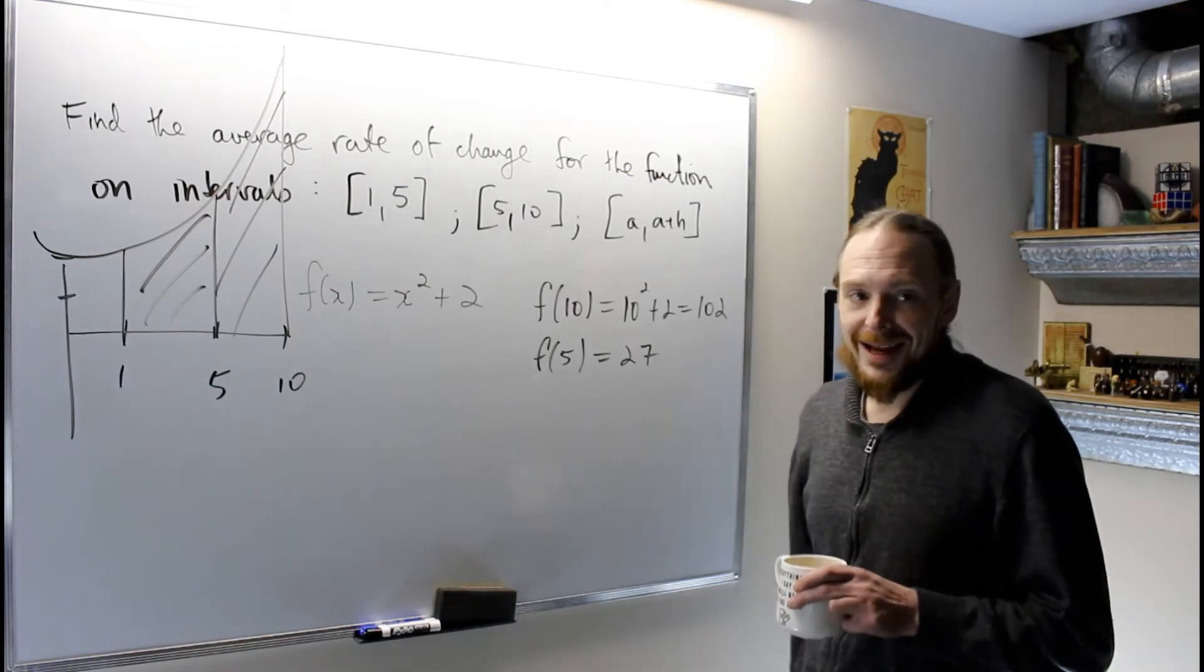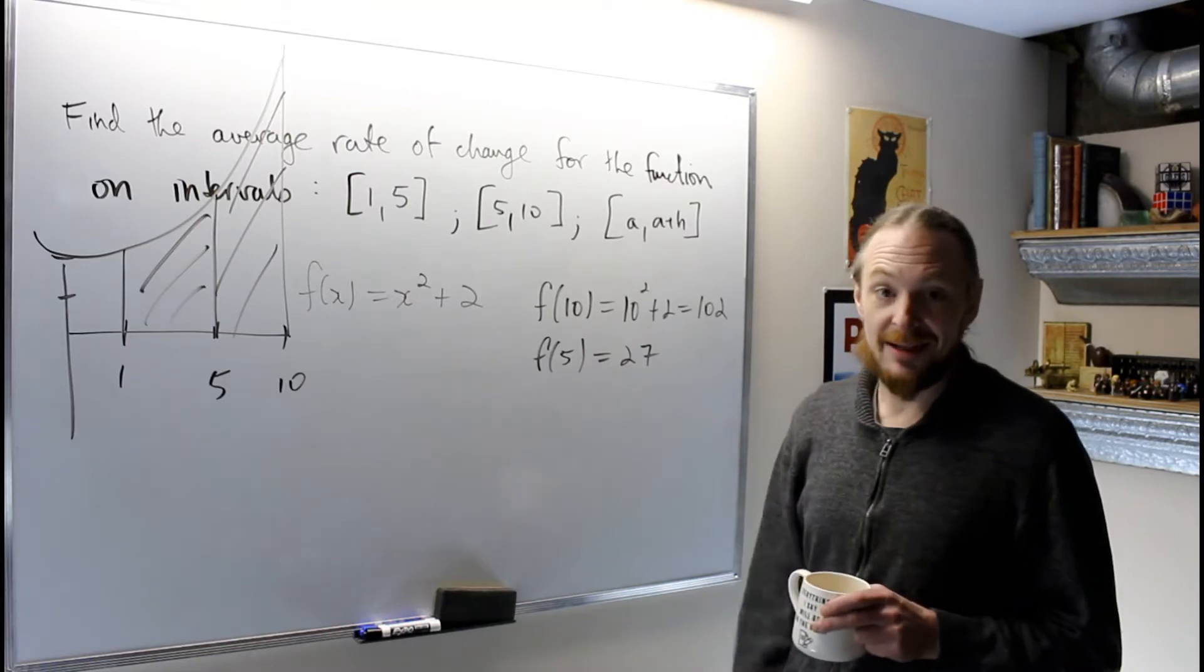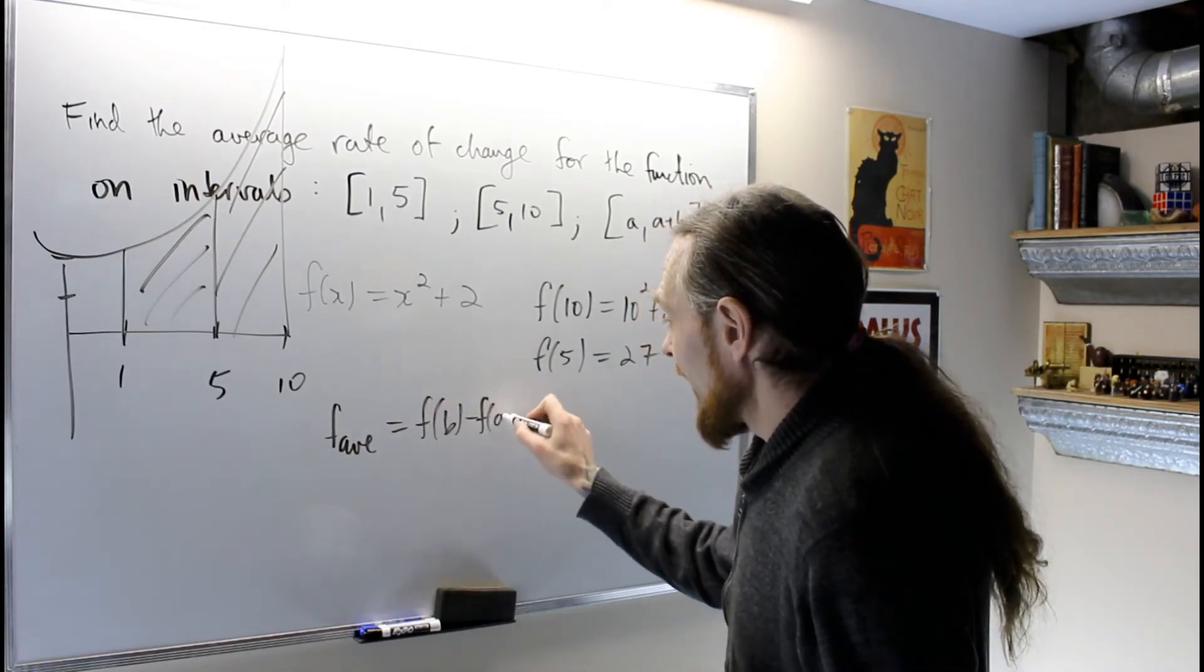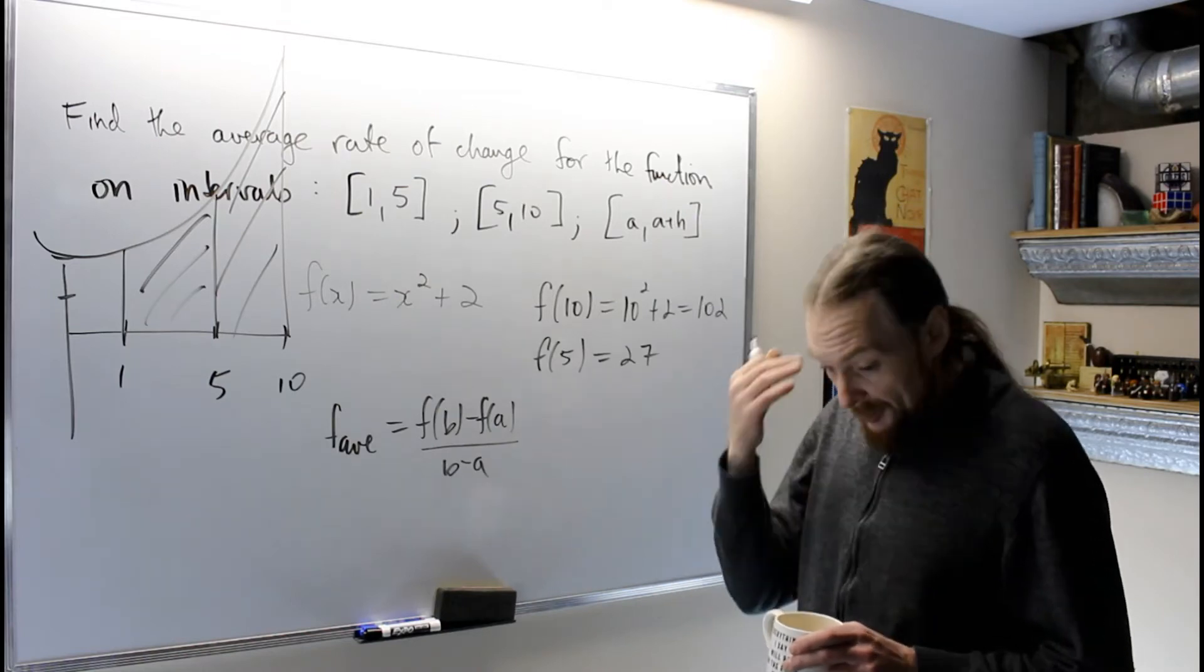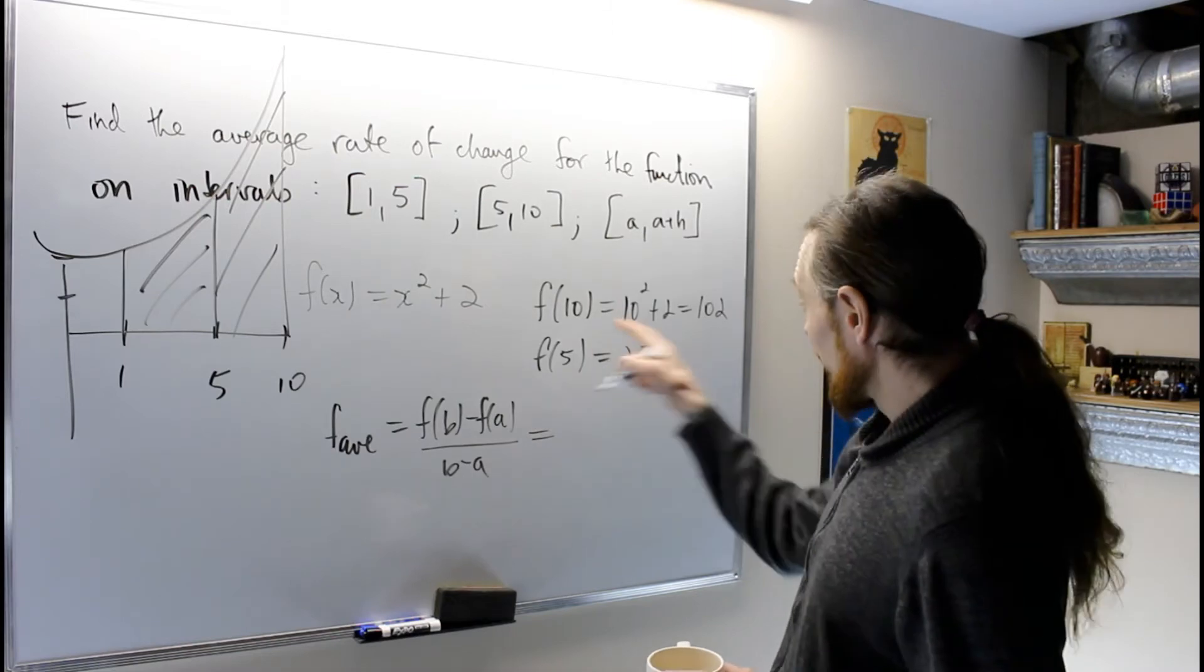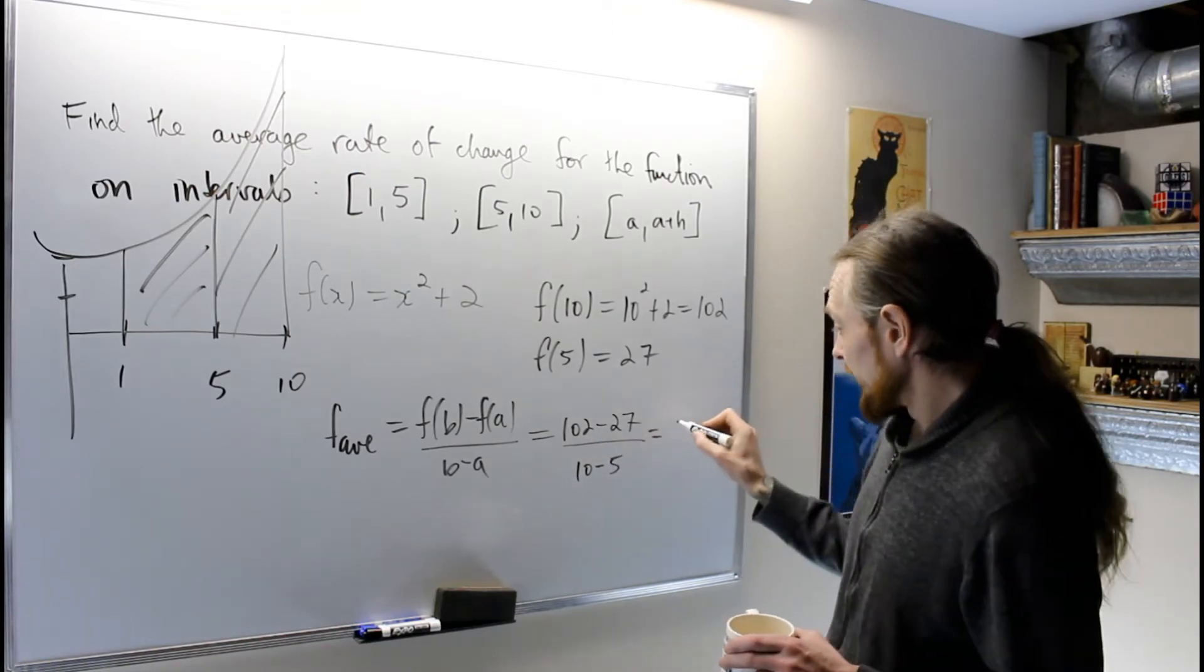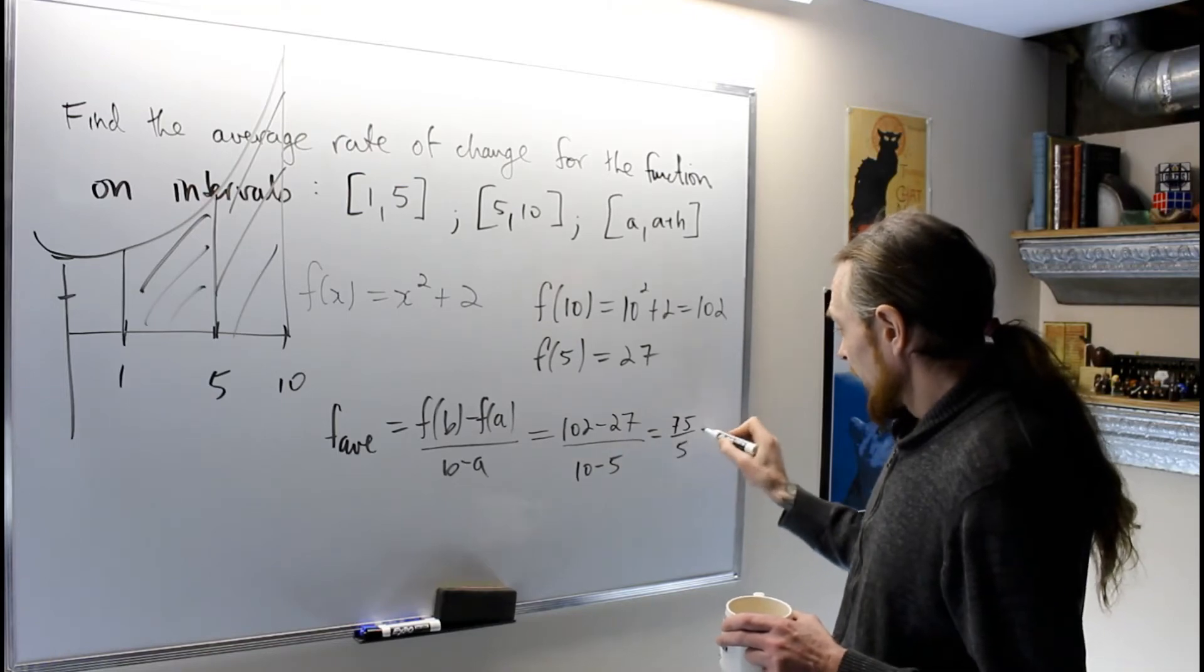I have my two values. F average equals f(b) minus f(a) over b minus a. Regurgitating the definition helps your brain memorize what this is, so you're not thinking about what it is on an exam. Then I put in the pieces: 102 minus 27 over 10 minus 5, which is 75 over 5, which is 15.